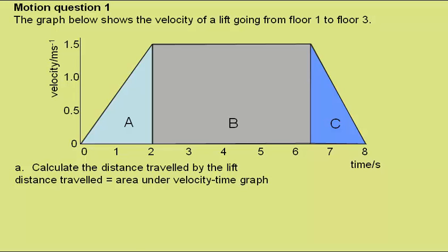The area of a triangle is half times the base times the height, and so the area of this total shape is half times 2 for the base of A times 1.5, the height of A.